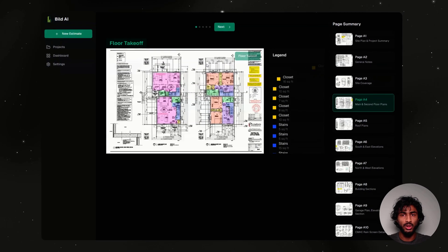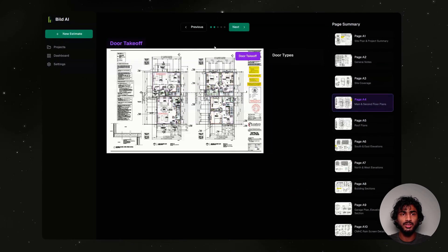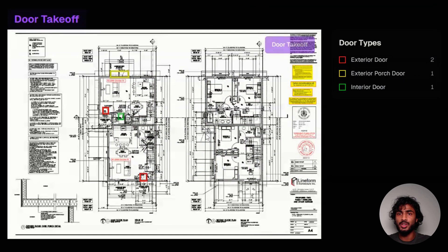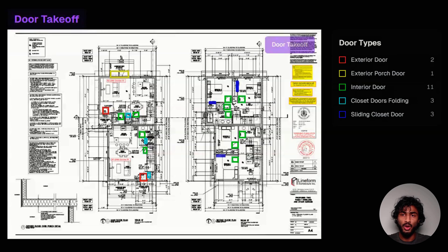Once it's pulled out all of the areas, it'll move on to doors. For doors, there are a bunch of different types from exterior to folding closet doors, and each of these has their own specific materials.